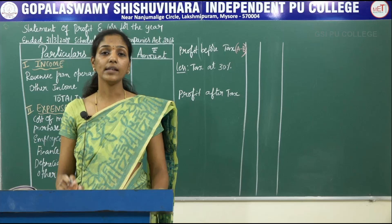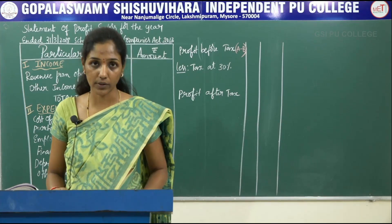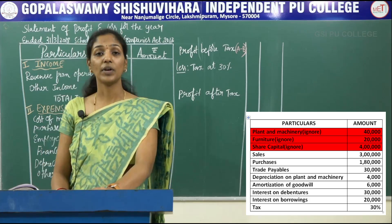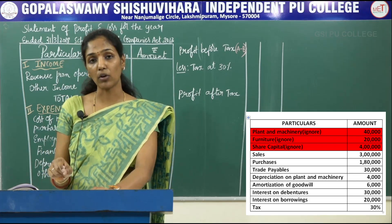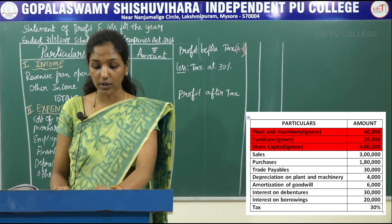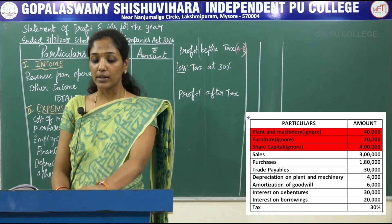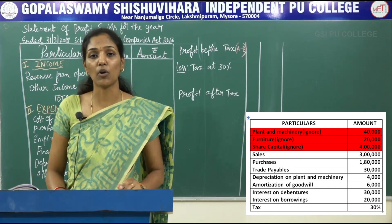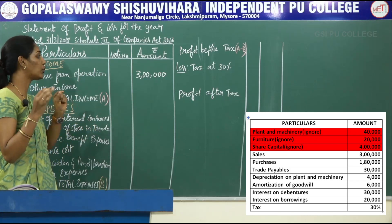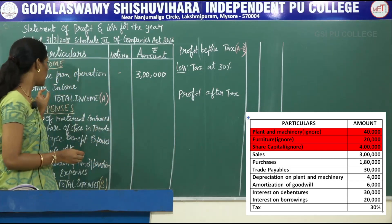Now you have to fill this statement. You should ignore the items relating to the balance sheet and consider only the items relating to the profit and loss statement. Plant and machinery — ignore, it is recorded in the balance sheet. Furniture — also ignored, it is recorded in the balance sheet. Share capital — also recorded in the balance sheet, do not consider it. The next is sales, rupees 3 lakh. This should be recorded in the profit and loss statement. Sales is nothing but revenue from operation, so record 3 lakh in revenue from operation.